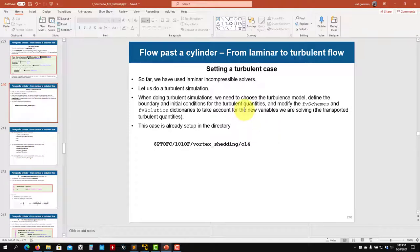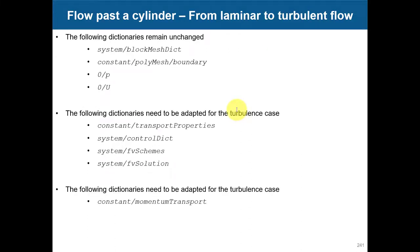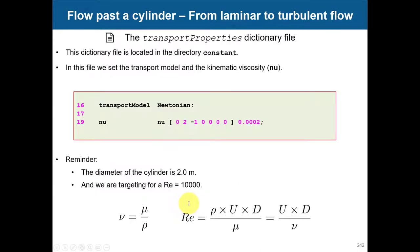We need a different solver because icoFoam doesn't have turbulence models. We also need to add entries to solve the new equations. Most dictionaries remain unchanged, but the control dict, fvSolution, and transport properties need to be adapted for the turbulence case. There is also a new dictionary where you set up the turbulence model.